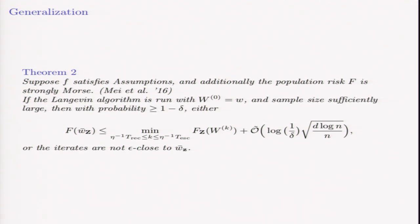How do we generalize this? We've been talking about ERM, but naturally we also want to talk about the population risk. For this, we leveraged some really nice work by Mei, Bai, and Montanari, who talk about the relationship between the empirical risk and the population risk.